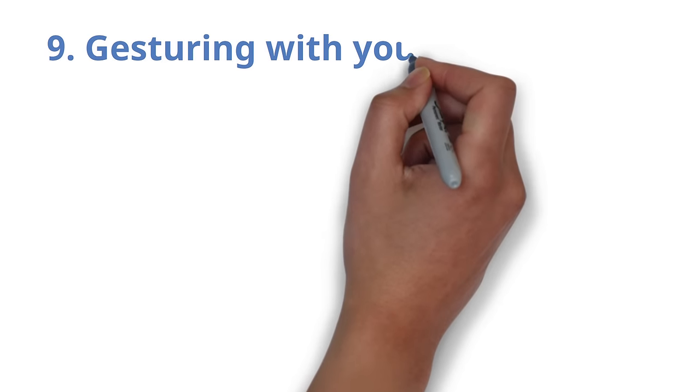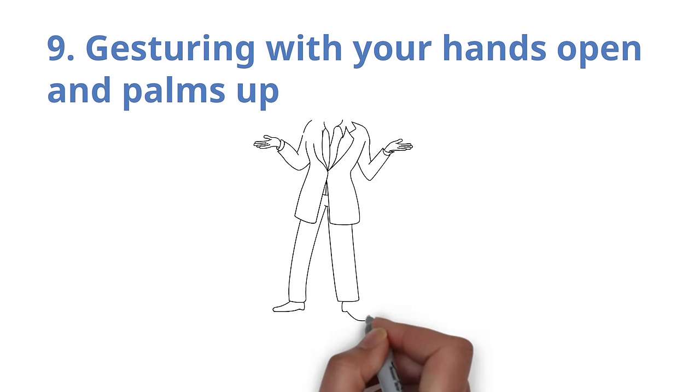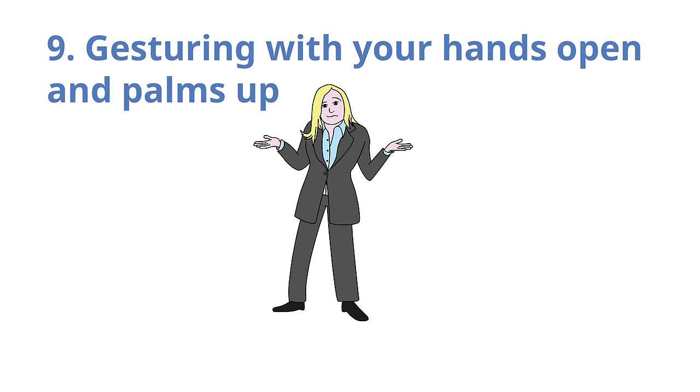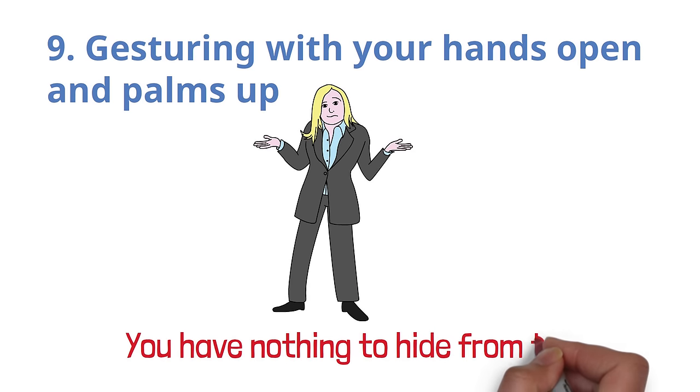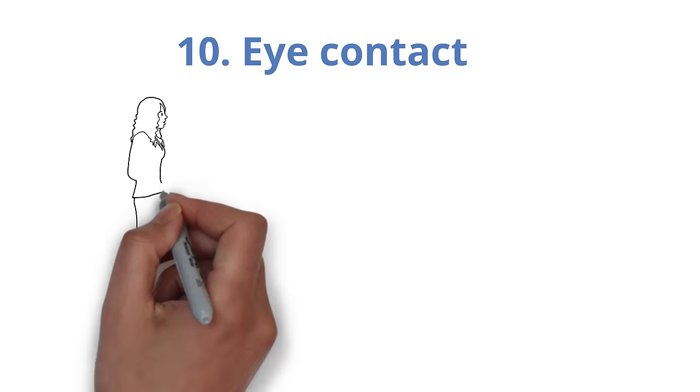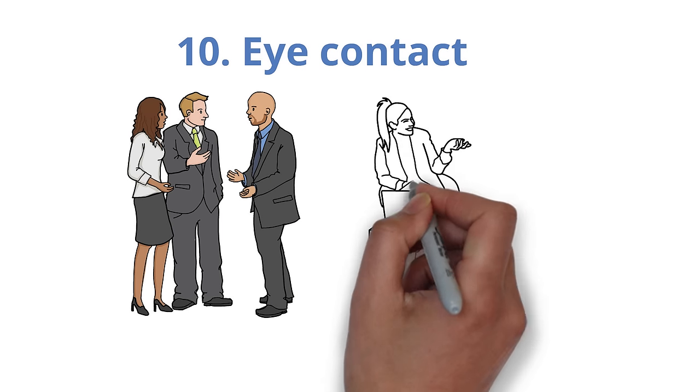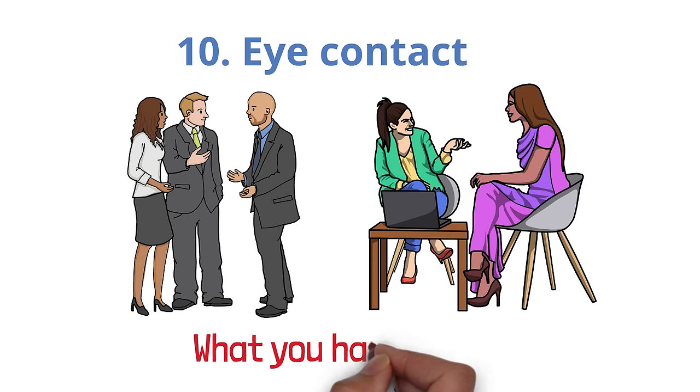Number 9. Gesturing with your hands open and palms up. Hold your hands open and make a palms up motion to signify that you have nothing to hide from them. Number 10. Eye contact. You need to make eye contact with the person you're talking to if you want them to feel comfortable with the conversation and accept what you have to say.